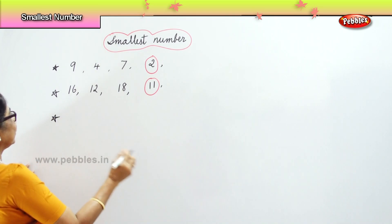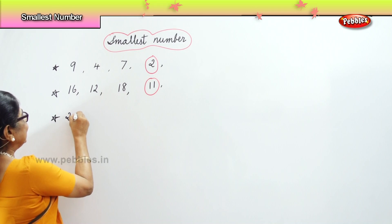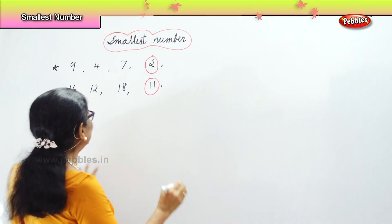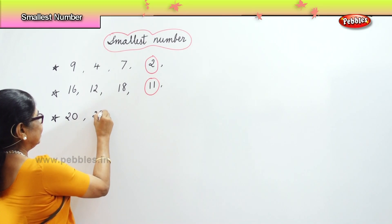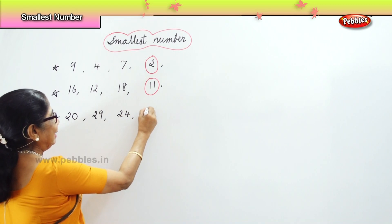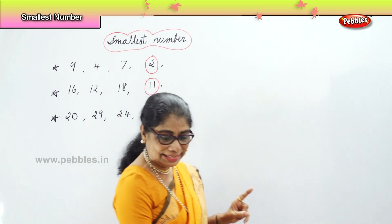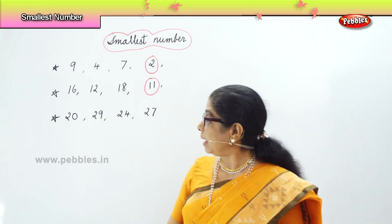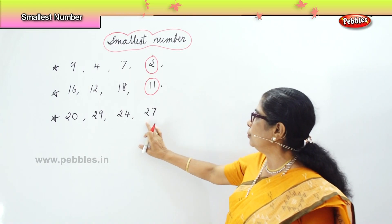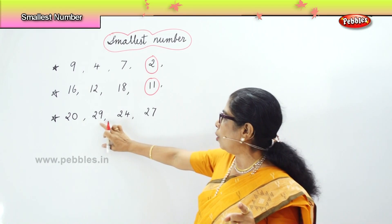Now look at this. I'll give you 20, 29, 24, and 27. All the numbers are in 20s. Look at the first numbers — all 2s.